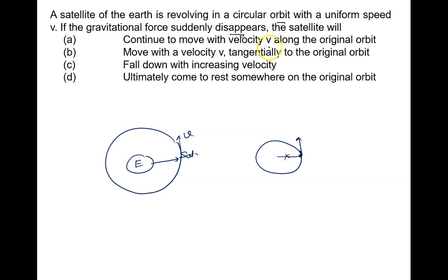So we have to check the correct answer. Continue to move with velocity v? No, it will not continue along velocity v along the original orbit. Of course, tangentially move with the velocity v tangential to the original orbit? Yes, option b is true because of the direction of motion.